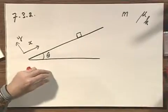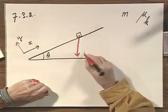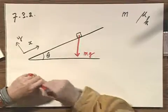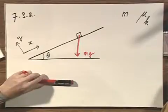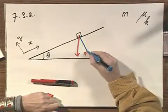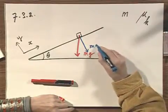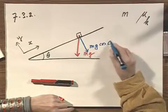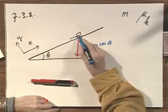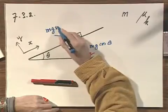I'm going to make a free body diagram. This is gravity, which is mg. I'm going to decompose gravity in two directions. One which is perpendicular to the slope, which is mg times the cosine of theta, and one which is parallel to the slope, which is mg times the sine of theta.